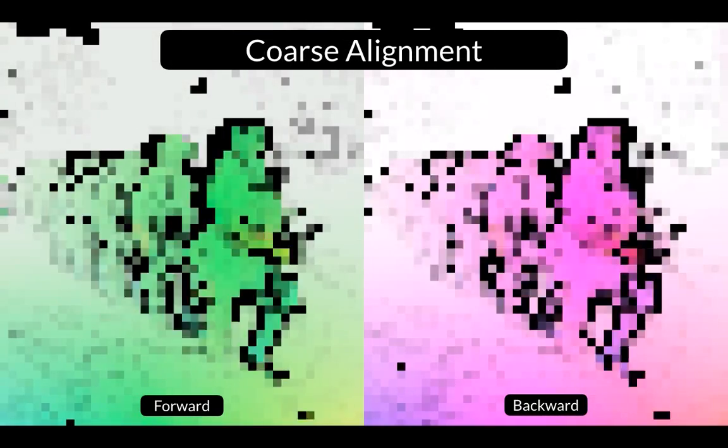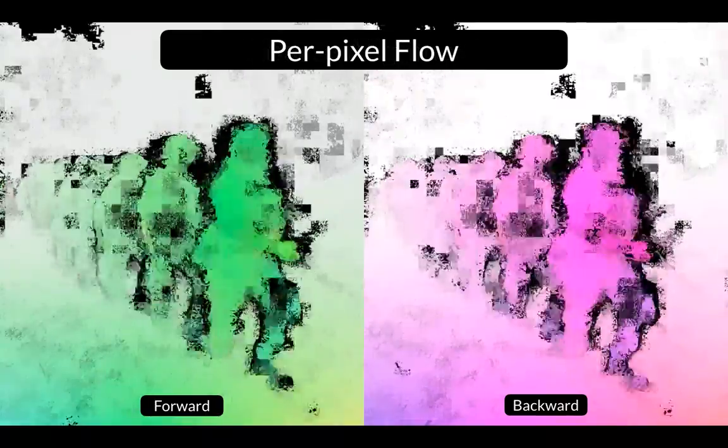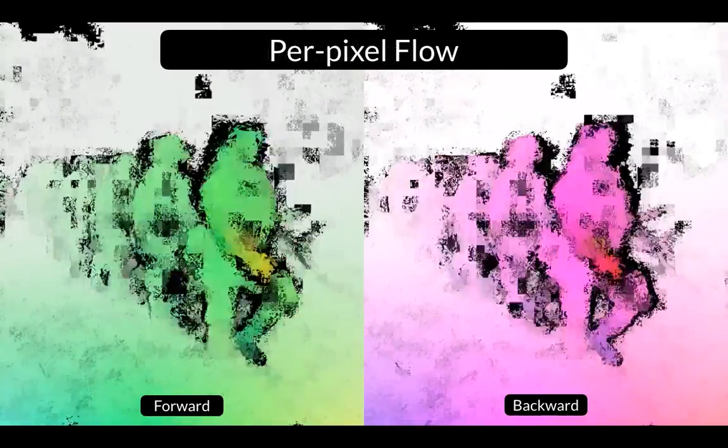First, we perform tile matching to recover coarse forward and backward flow fields. This is then upsampled into a noisy and incomplete per pixel flow field.